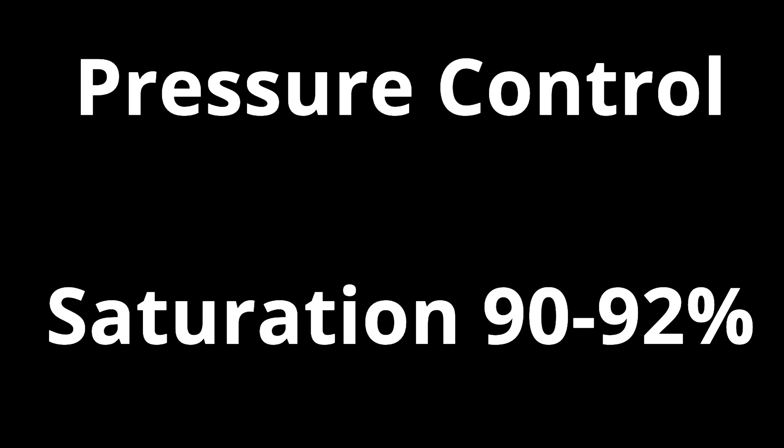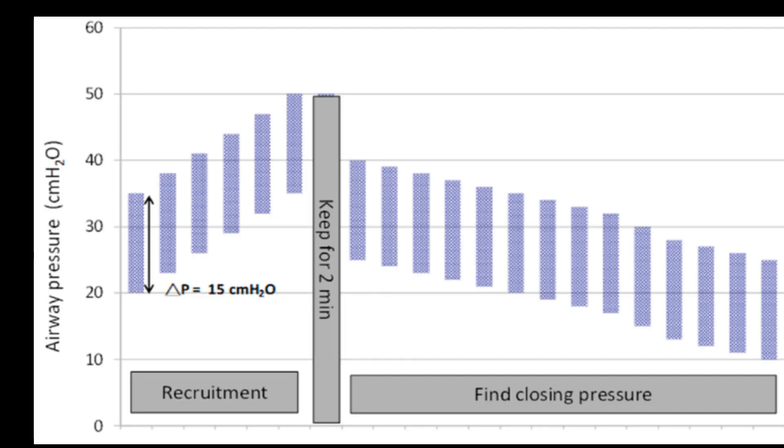Procedure of SRM is: Using pressure-controlled ventilation adjust FiO2 to target oxygen saturation of 90-92%. Set pressure to 15 cm water above the PEEP and maintain this difference.